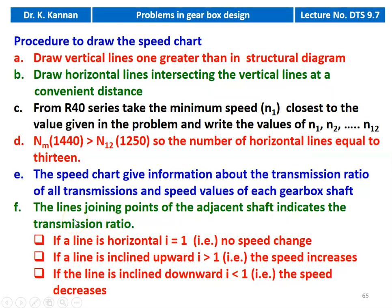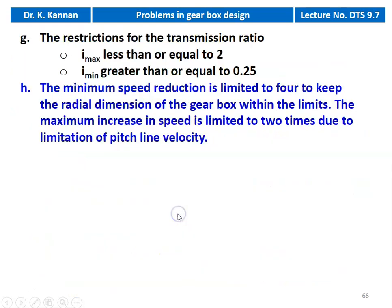The transmission lines connecting adjacent shafts have three different types: if the line is horizontal, there is no change in speed — I equals 1. If the line is inclined upward, I is greater than 1, meaning speed is increasing. If the line is inclined downward, I is less than 1, meaning speed decreases. There are restrictions: I maximum, when speed is increasing, should be less than or equal to 2. When speed is decreasing, I minimum should be greater than or equal to 0.25. This limitation is due to the geometry of the gearbox and pitch line velocity. The minimum speed reduction is limited to 0.25 (that is 1 by 4) to keep the radial distance of the gearbox within limits. When speed reduction is below 0.25, the overall size of the gearbox and radial distance will increase.